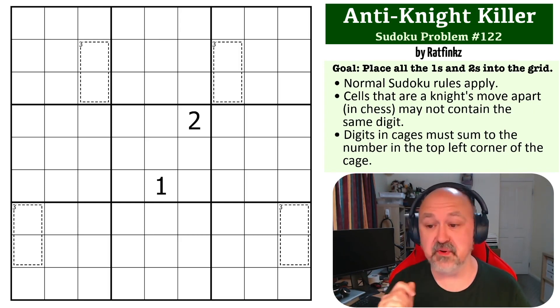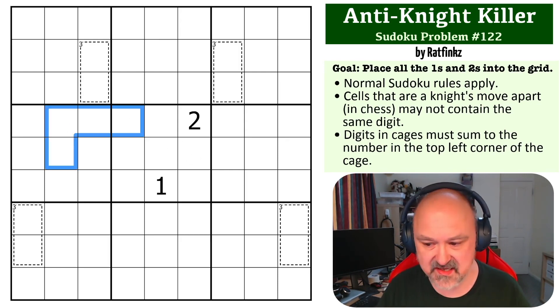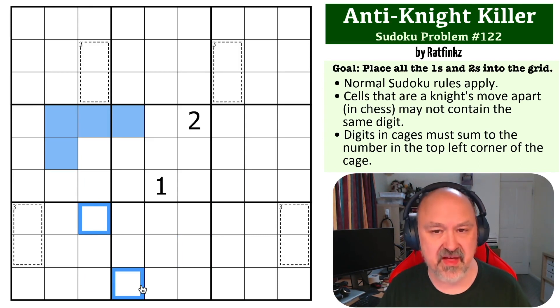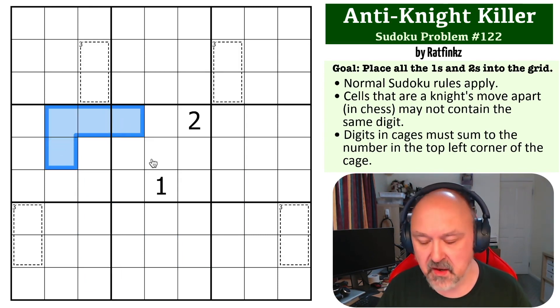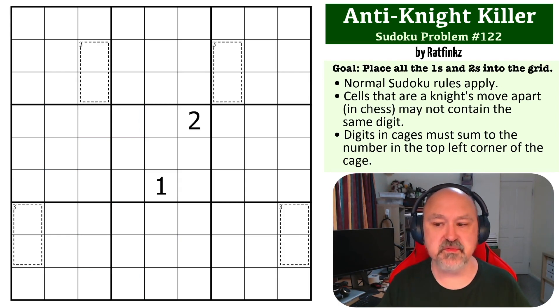So the rules in play are no two cells that are a knight's move apart. A knight's move looks like this, so any cells that have that shape apart, these two cells could not contain the same digit. The same would be true if it was that shape or that shape. Any rotation of this shape, if the two cells at the end of that shape cannot be the same digit. So any two cells that are a knight's move apart may not contain the same digit.